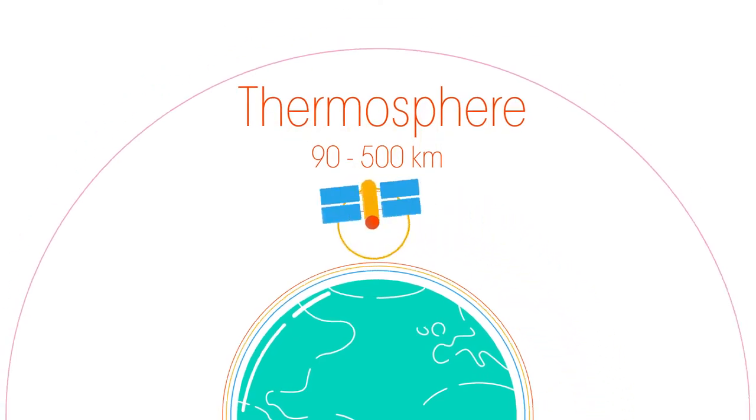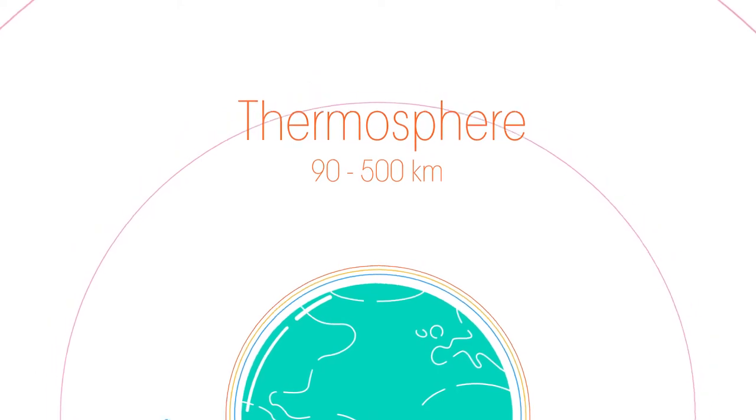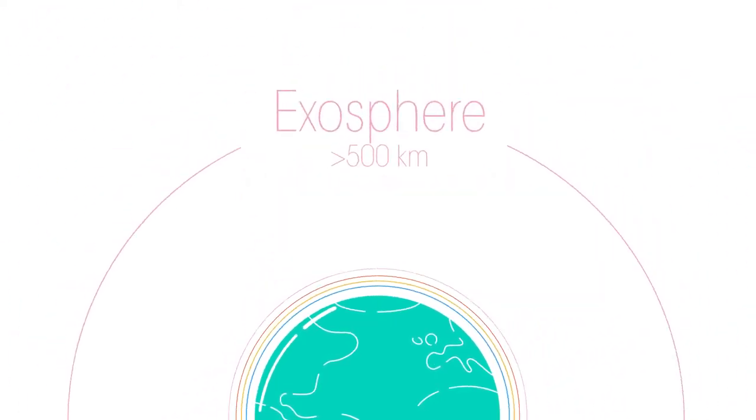Then there's the thermosphere. The International Space Station orbits the Earth at 400km. And then the exosphere is where our atmosphere merges into outer space.